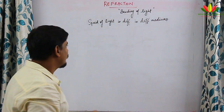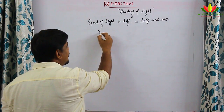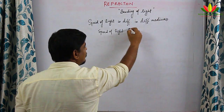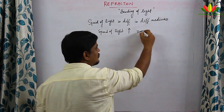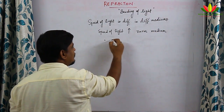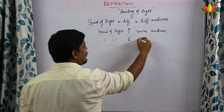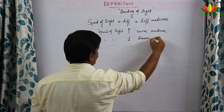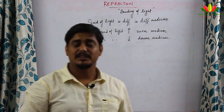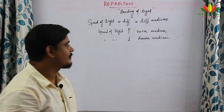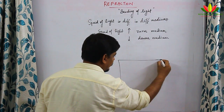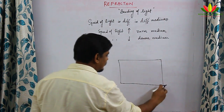Speed of light is higher in rarer mediums and lower in denser mediums. Whenever the speed is lower it is a denser medium; when speed is higher it is a rarer medium. Let us do an experiment — I have a glass slab.